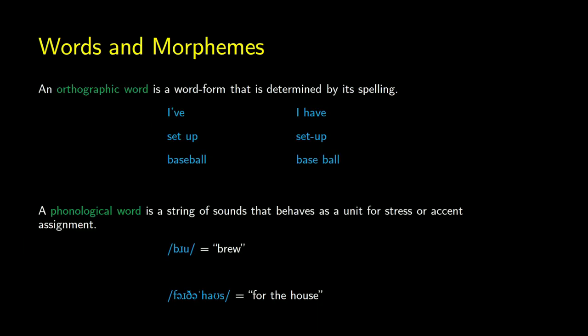There are multiple different ways to define what a word is. In writing — what we call orthography — an orthographic word is a word form determined by its spelling. So 'I've' might be one word because there's no space around it, while 'I have' is probably two words. 'Set-up' with a dash could be one word; without the dash, two. The problem with 'baseball' is that it's spelled without a space, but adding the space gives the same meaning — so orthographic word isn't the best definition to use.